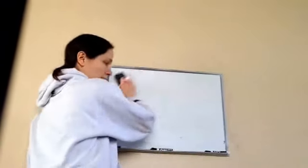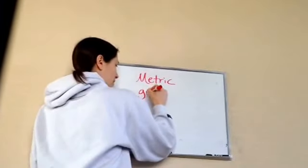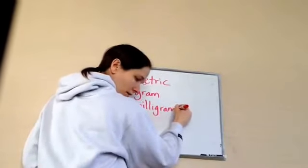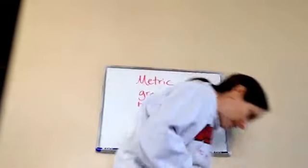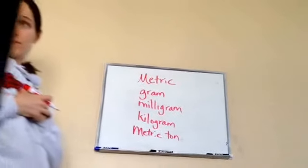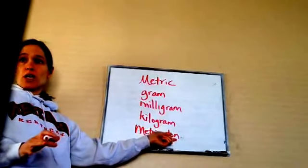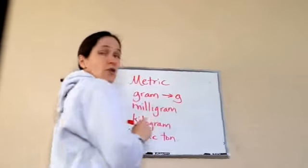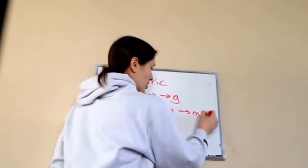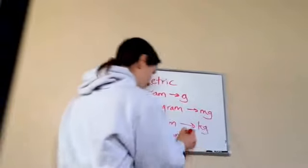Now I'm going to erase this, and we're going to do a chart in just a minute. I want to teach you about the metric system real quick. The metric system includes things like gram, milligram, and kilogram. There's also something called a metric ton. We have the U.S. customary ton and the metric ton — they both use the word ton, but it actually means a different measurement. A gram is abbreviated G, milligram is mg, kilogram is kg, and a metric ton is just T.